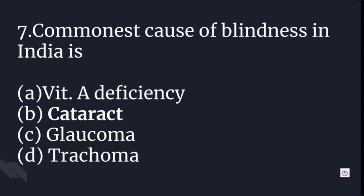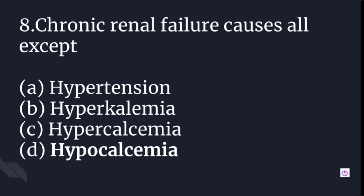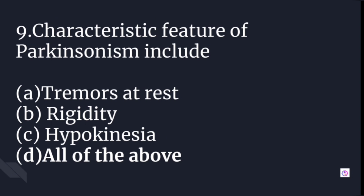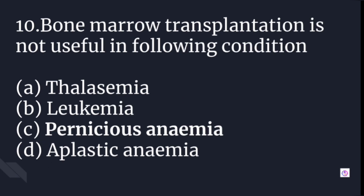The commonest cause of blindness in India is cataract. Chronic renal failure causes all except hypocalcemia. In renal failure there will be hypertension, hyperkalemia, and hypercalcemia, but hypocalcemia will not occur. Characteristic features of Parkinsonism include tremors at rest, rigidity, and hypokinesia — the answer is all of the above.